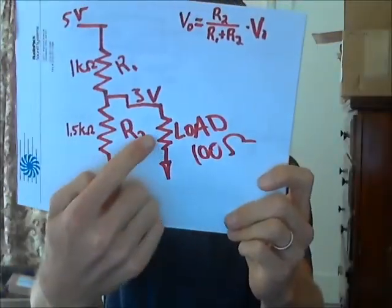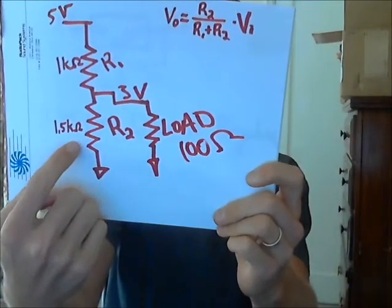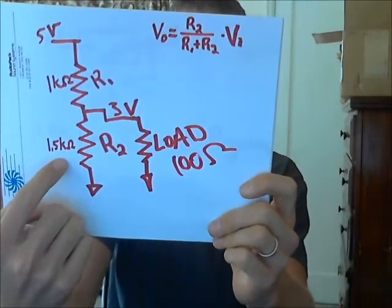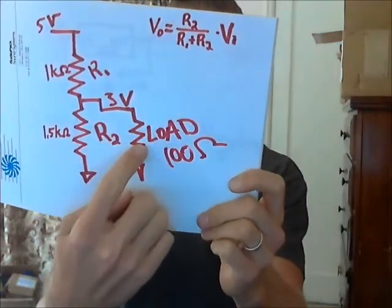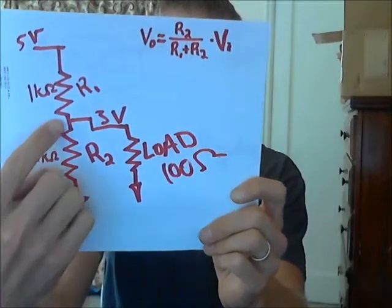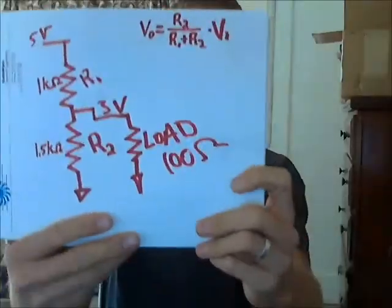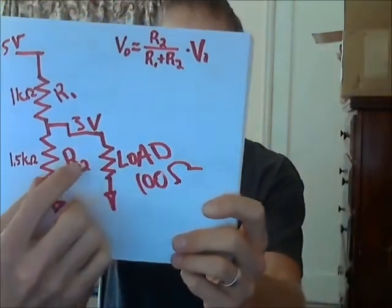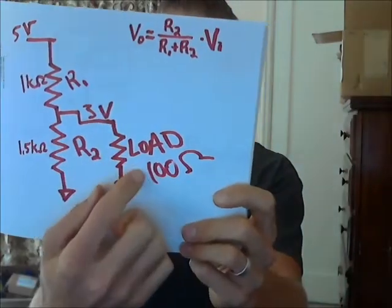No, and here's why. Because when you hook up this load, it ends up being in parallel with this 1.5K resistor. So when you rerun this equation with a 100 ohm in parallel with a 1.5K, with the 1K ohm in series, you're going to end up with a different output voltage - your 3 volts will no longer be 3 volts. And what's even more complicated is if you change R1 to account for the load, if you then change that load to a 1K ohm or a 10 ohm load, your 3 volt output will be off again. That's not going to work in all cases.